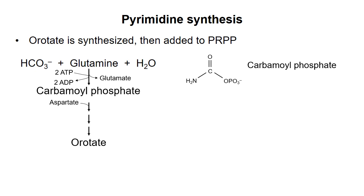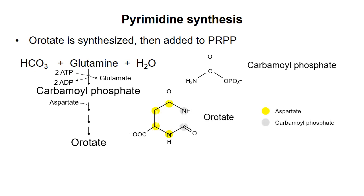After addition of aspartate and a few more chemical steps, the base orotate is formed. The colored circles indicate the origin of the atoms in the ring.